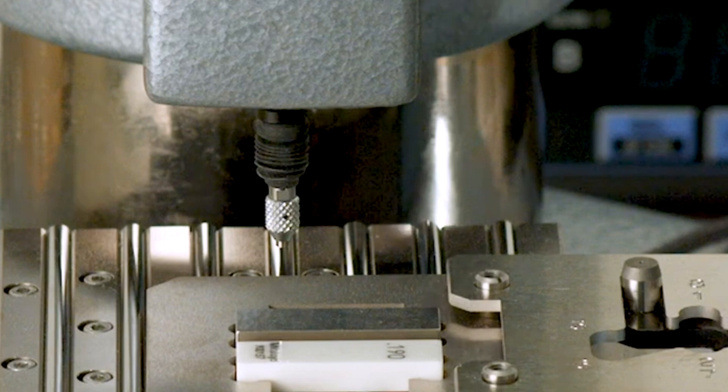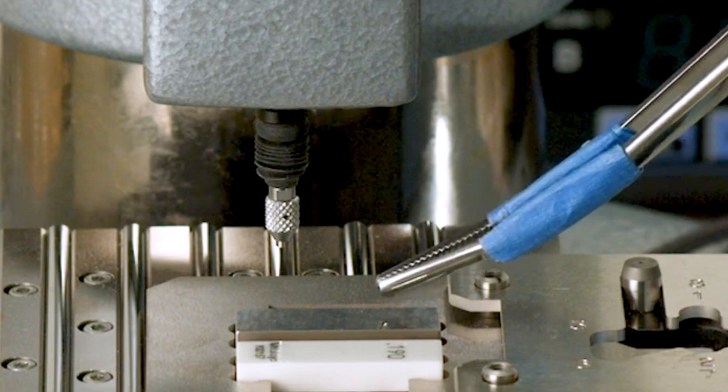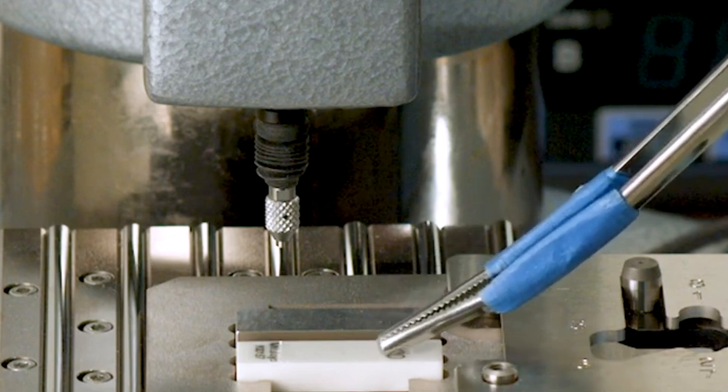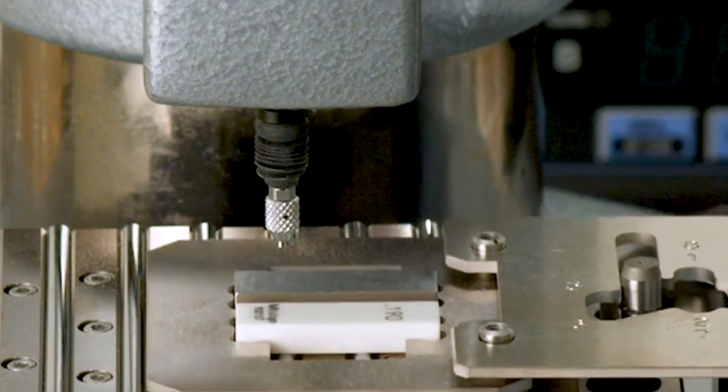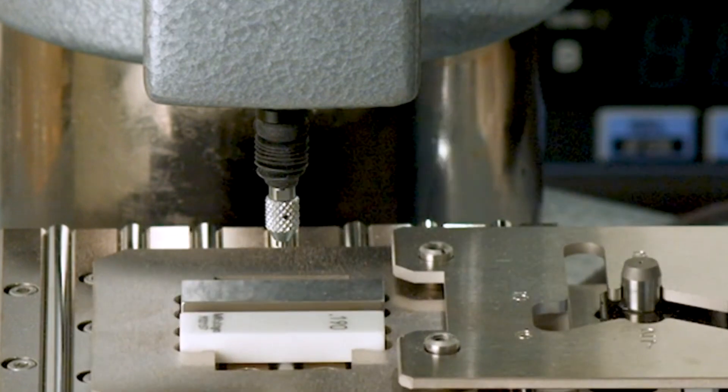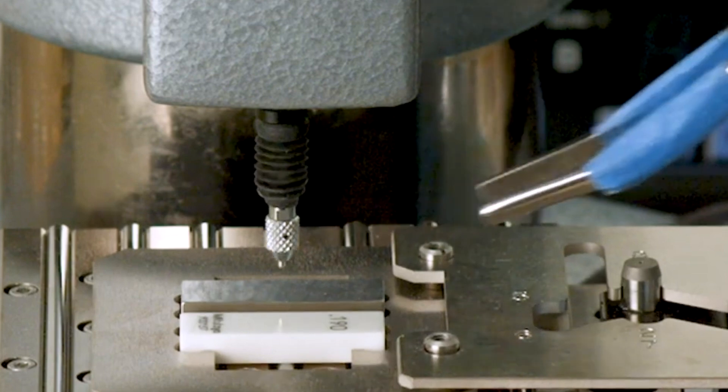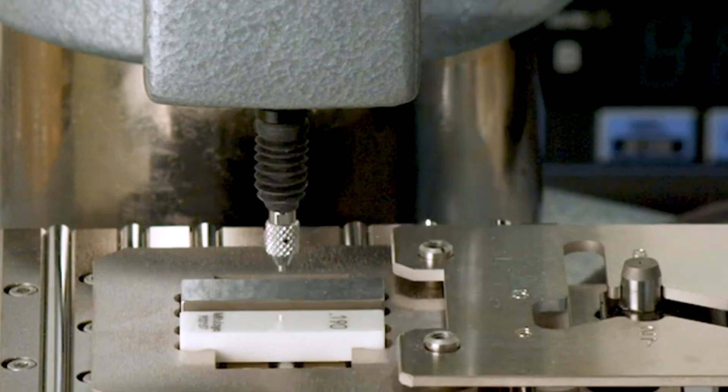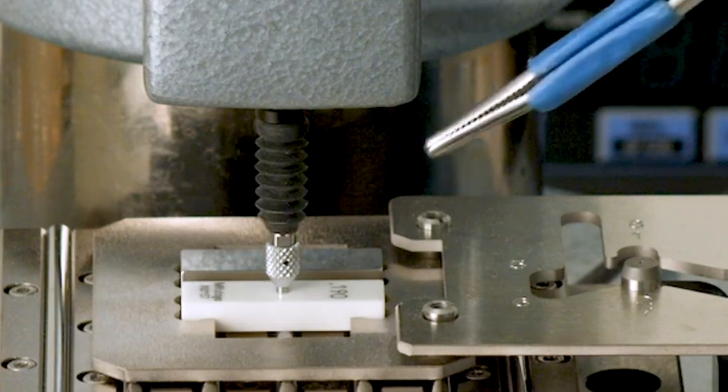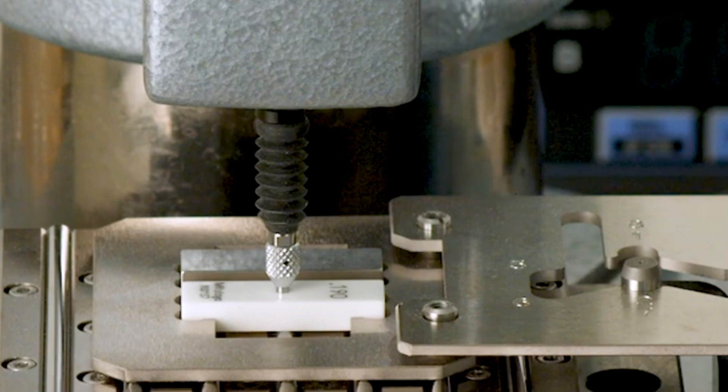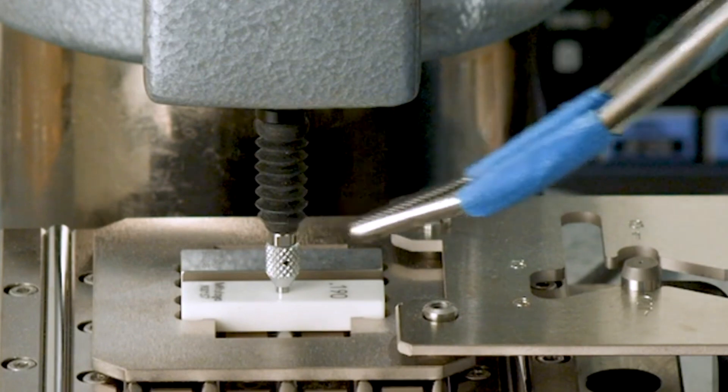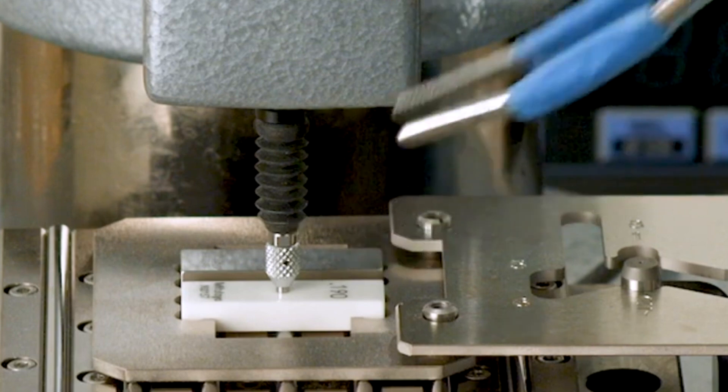Gauge blocks are usually calibrated using a comparison method. This is the master block and this is the customer block to be calibrated. We set the comparator using the master block and then measure the customer block. In accordance to B89.1.9, the length tolerance for gauge blocks applies across the entire surface of the gauge block, not just at that gauge point.